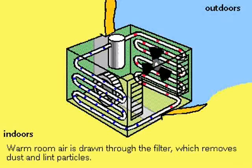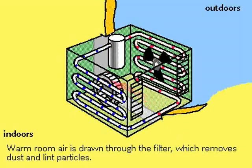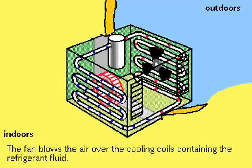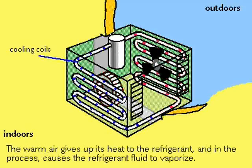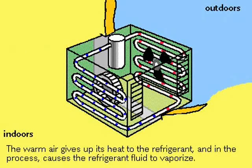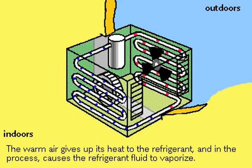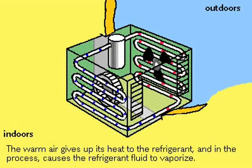Warm room air is drawn through a dust filter by a fan, then blown over the cooling coils which circulate the refrigerant in its liquid state. As the room air flows by the coils, it causes the liquid in the coils to evaporate, and in the process, heat is absorbed by the refrigerant as it turns to gas. The cooled air is blown back into the room.